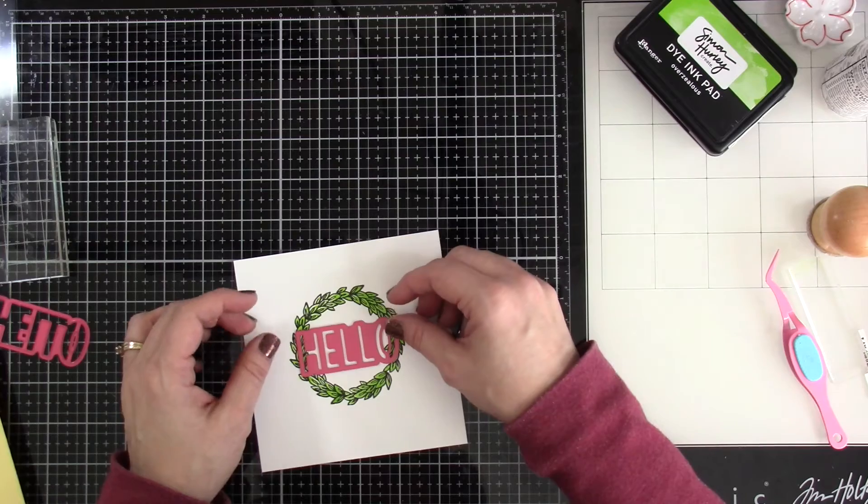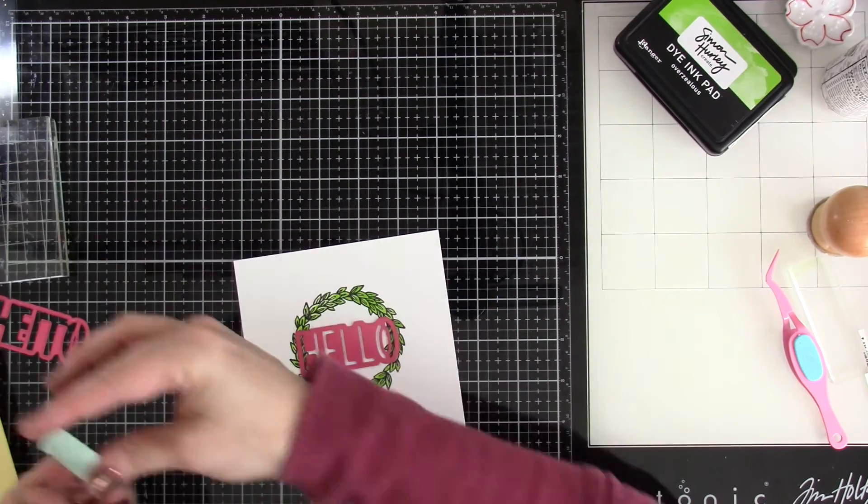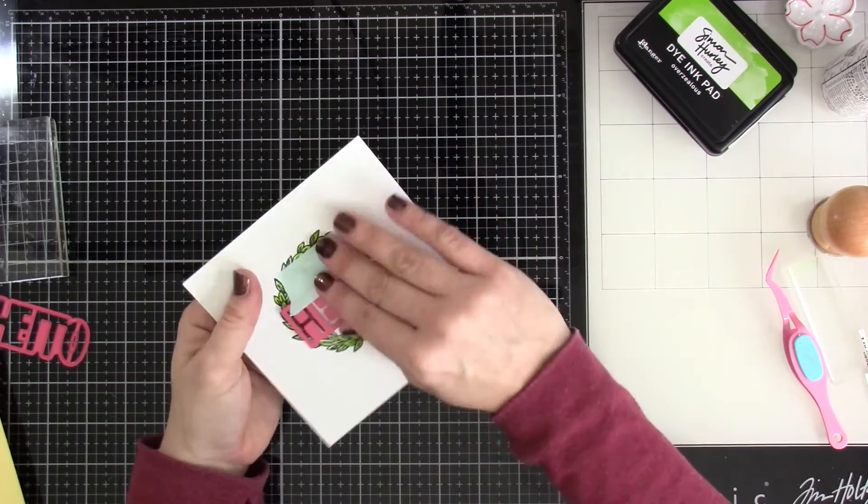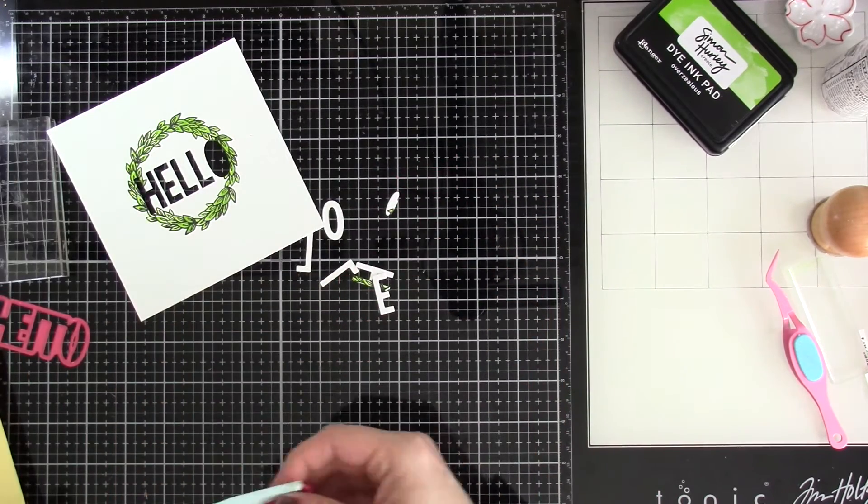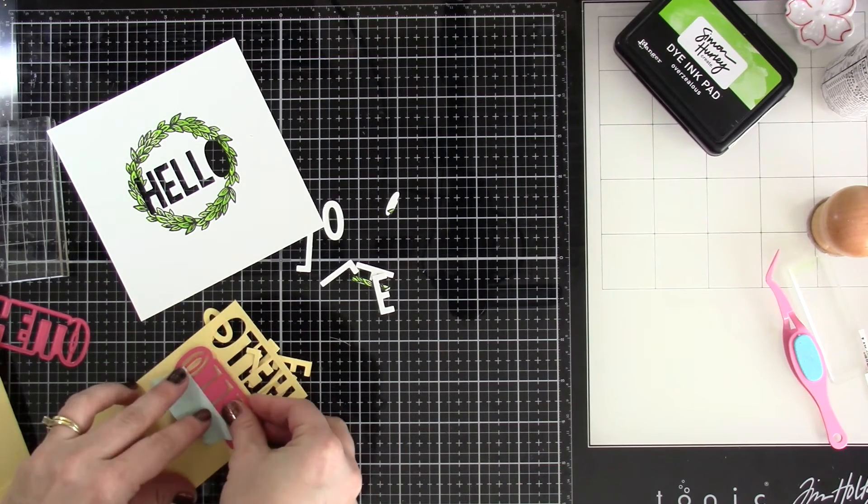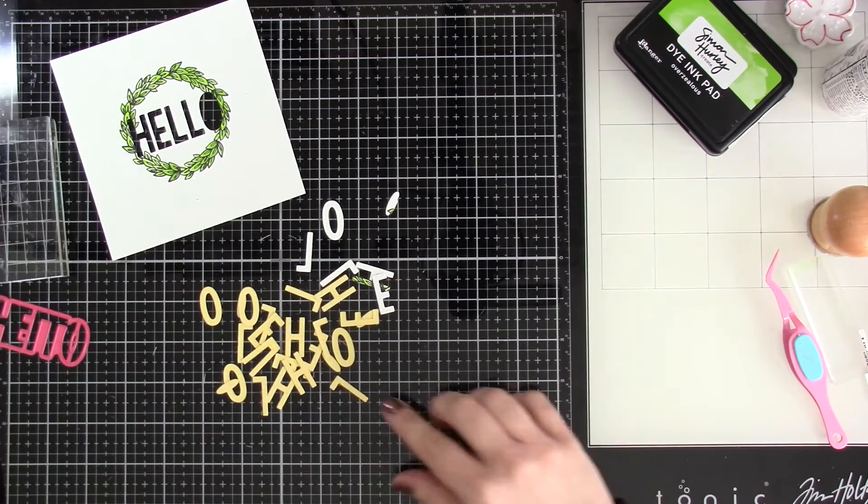So now that that is done, our stamping is done, I'm going to pull in the hello die cut, not the shadow, just the hello. And I'm going to tack that down with a little bit of mint tape, run that through my die cutting machine and keep all of the pieces, all of them, even the center of the O. And then I'm going to use the hello die and cut that out on some yellow cardstock four more times.